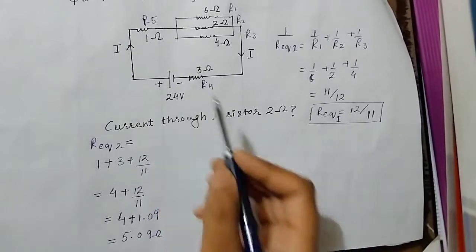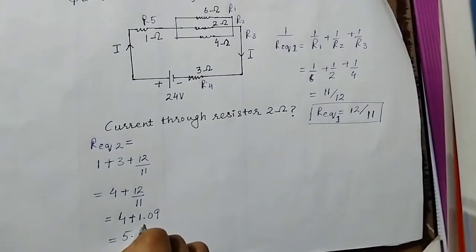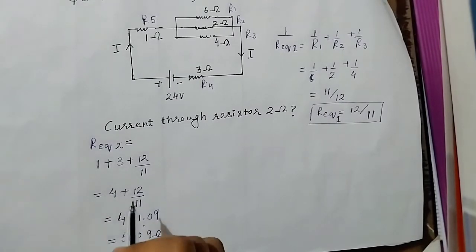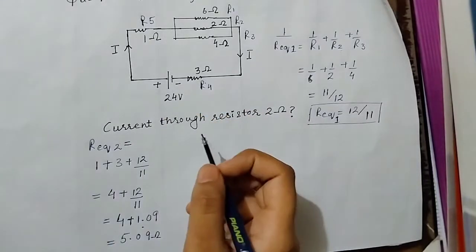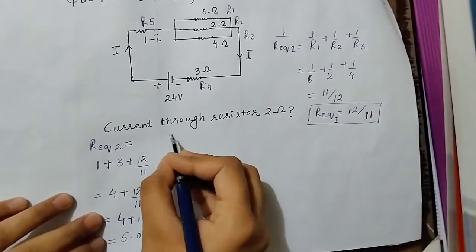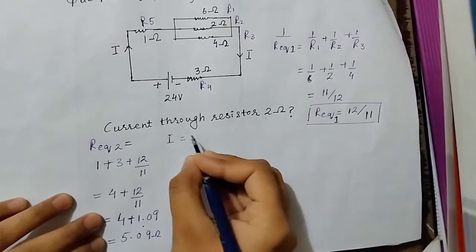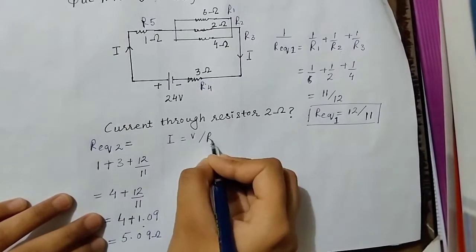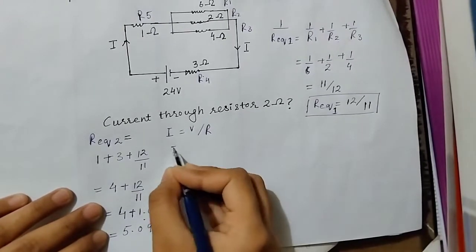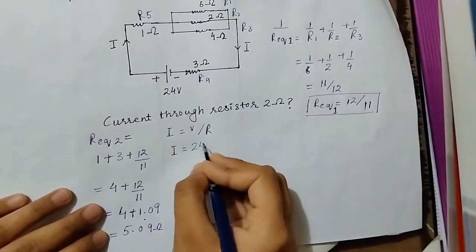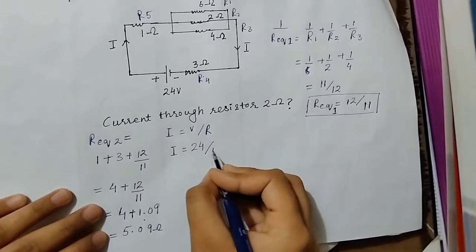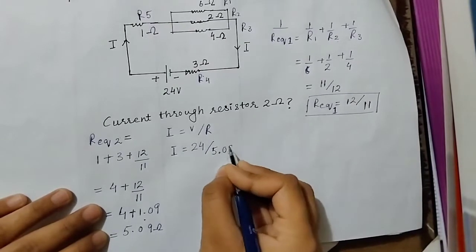Now for the whole circuit, voltage was given and we found the equivalent resistance. Now we will find the total current passed. Current formula: I equals V over R.